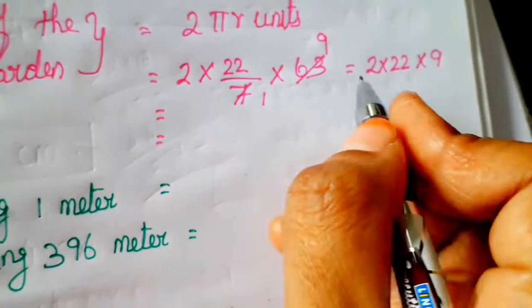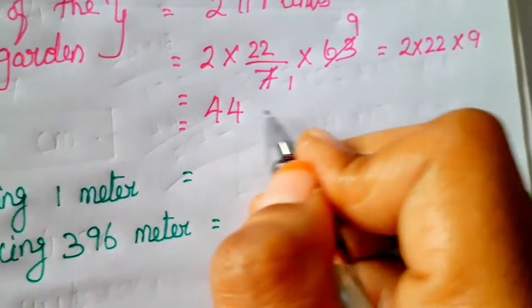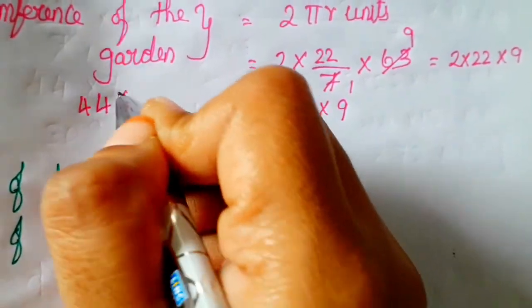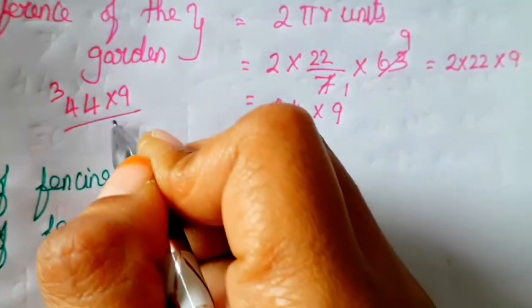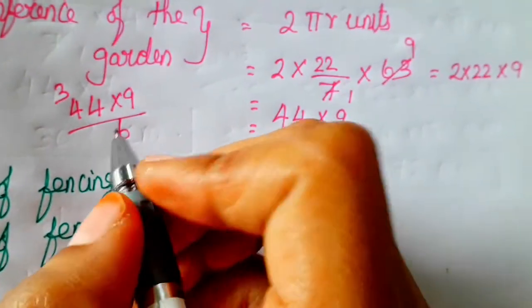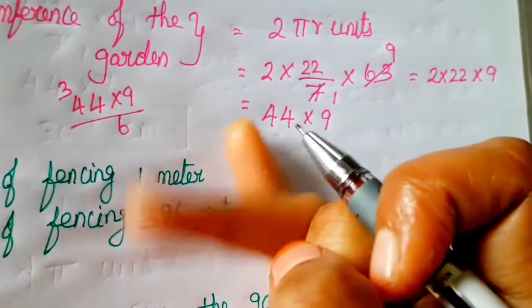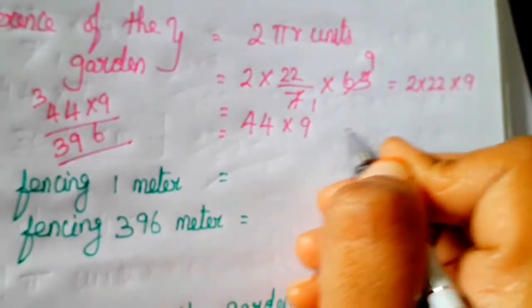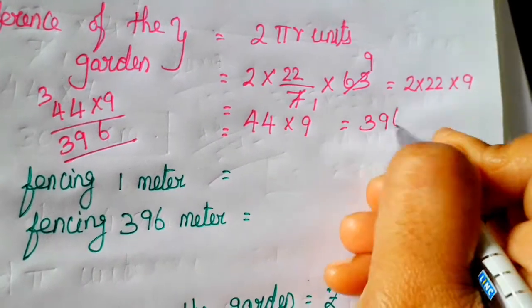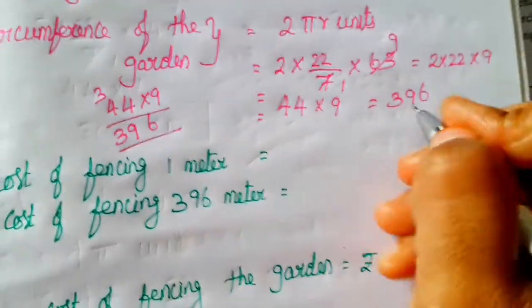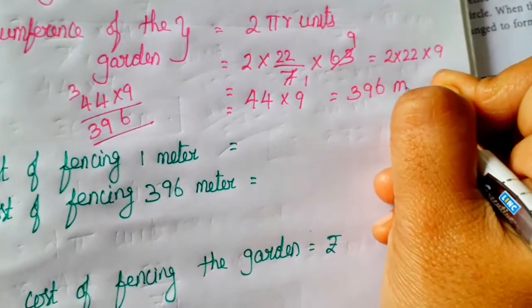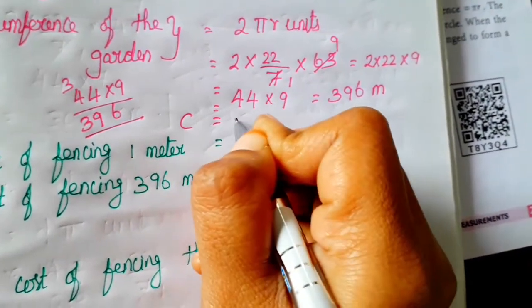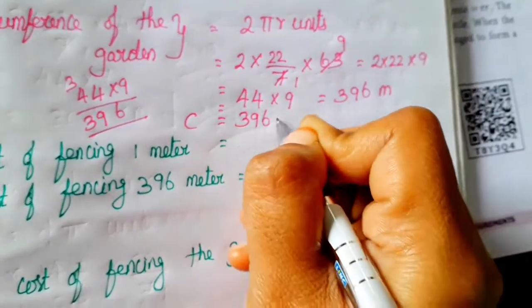C = 44 into 9. Multiply: 9 fours are 36, carry 3; 9 fours are 36, plus 3 is 39. So circumference = 396 meter.